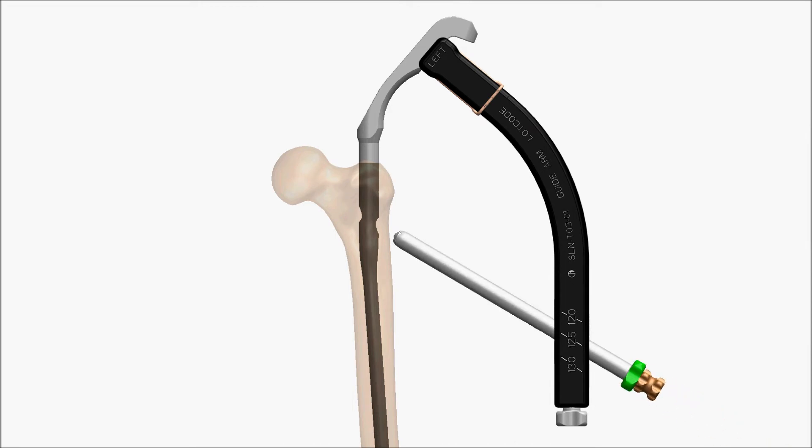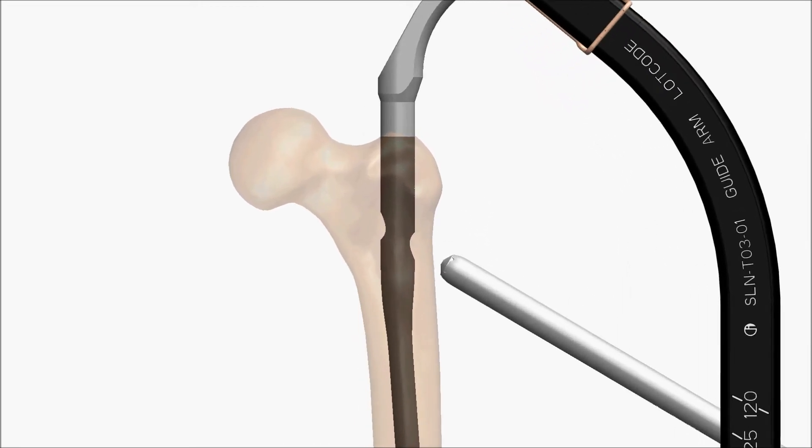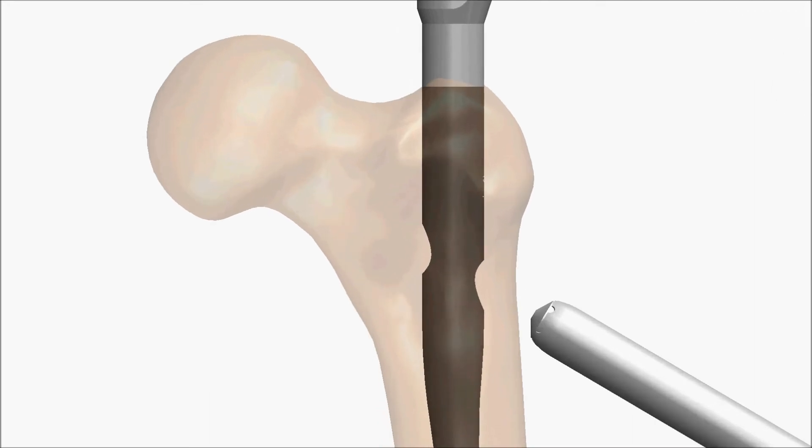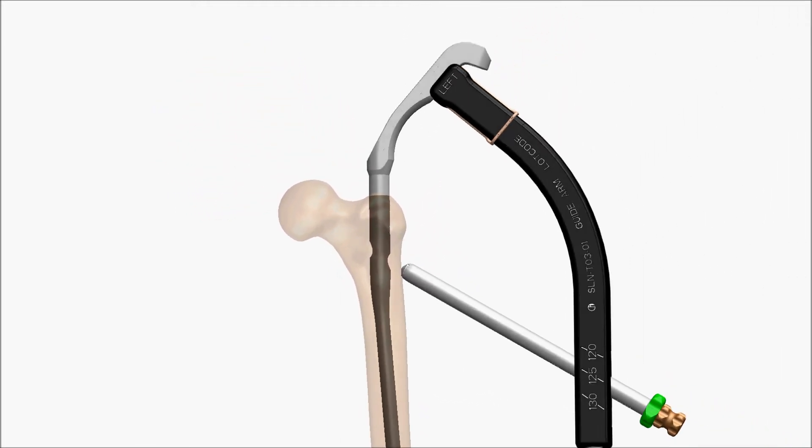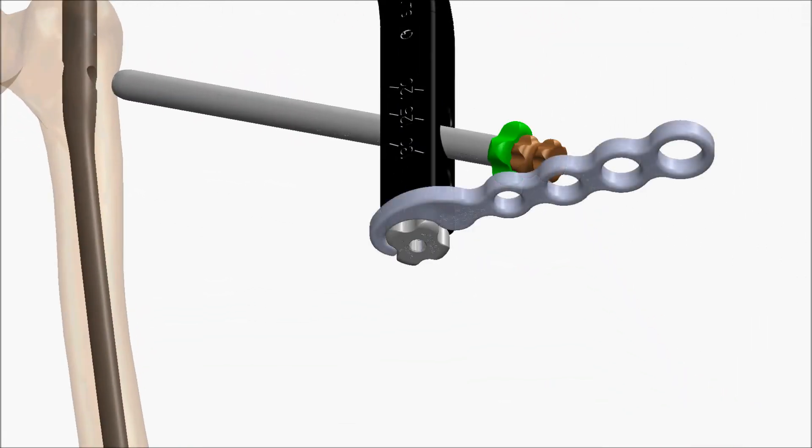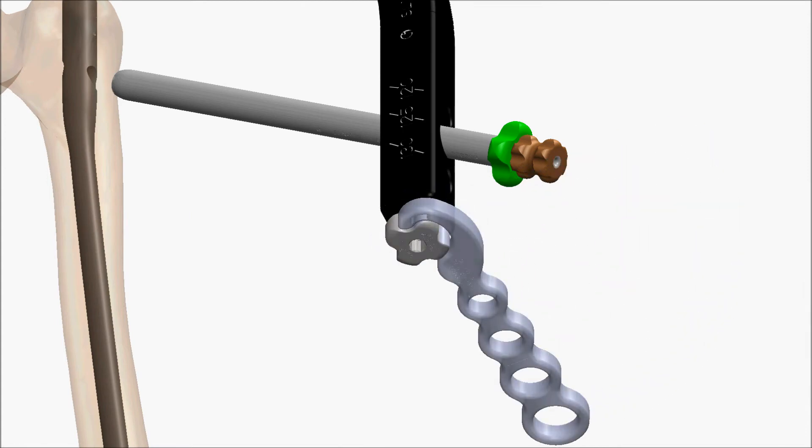Pass the guide sleeve and obturator through the guide arm and advance to the level of the bone. Ensure that the guide sleeve is in contact with the lateral cortex. Securely tighten the guide lock to ensure the guide sleeve remains fixed for the remainder of the procedure.